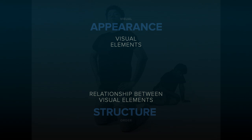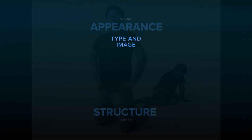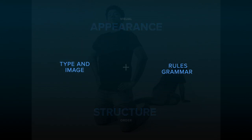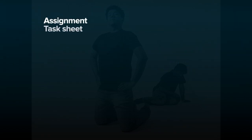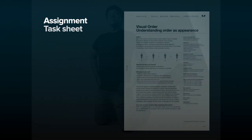In the context of the course, we substitute visual elements to type and image, and the relationship between type and image as the rules — that is, the underlying grammar. Therefore, the study of type and image and discovering the rules of arrangements is visual order. To experience the creation of visual order, a unique assignment is designed.